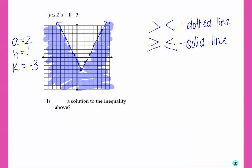So let's test and see if the point 2, 5 is a solution. 2, 5 is right here. That is not a solution because it's not in the shaded area.